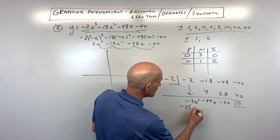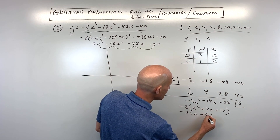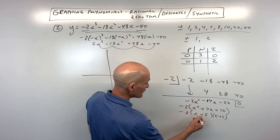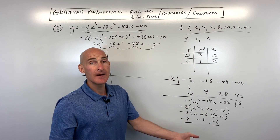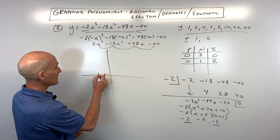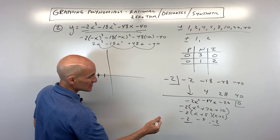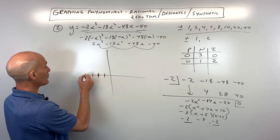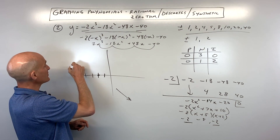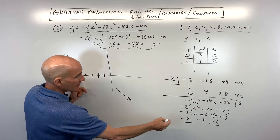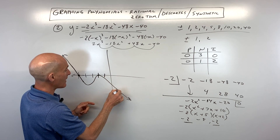Now we can factor this further. I factored out a negative 2 — that was our greatest common factor. We can factor further: x plus 5 times x plus 2 gives us back this quadratic. If we set these factors to zero, we get negative 5 and negative 2, and we also had negative 2 from earlier. So we have negative 2 twice — that's what we call a multiplicity. It's crossing at negative 2 with a multiplicity of 2, so it's going to have a parabola shape — either opening up or down — when it touches that point. And it's also going to cross at negative 5.